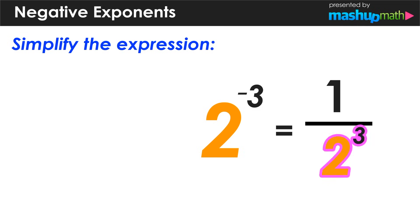We also know that 2 to the third power is equal to positive 8. And we can conclude that 2 to the negative 3 power is equal to either 1 over 8 or 0.125.